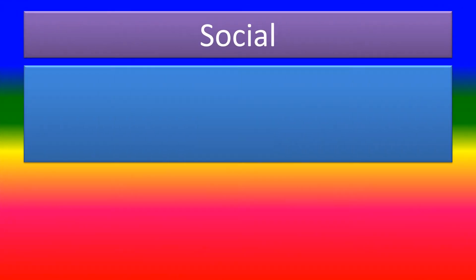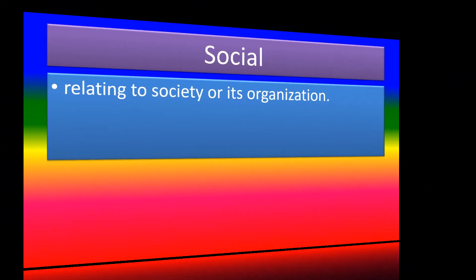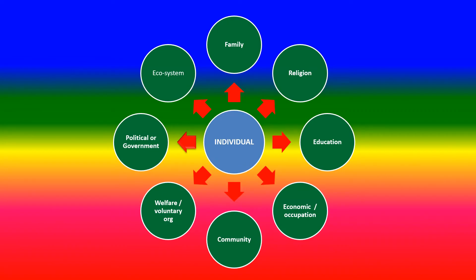What is meant by social? It is related to society and its organizations. Look at this picture — the individual has been interacting with all the components of society, including families, religion, education, occupational system and communities, welfare institutions, and political organizations. Since social marketing involves all these components of society.